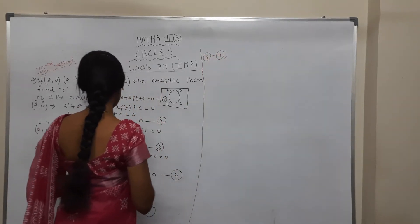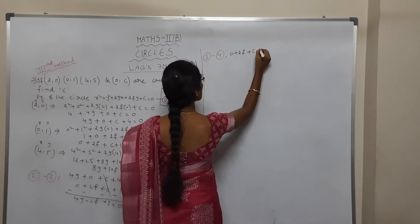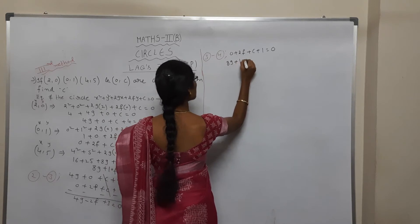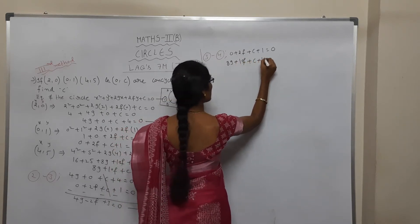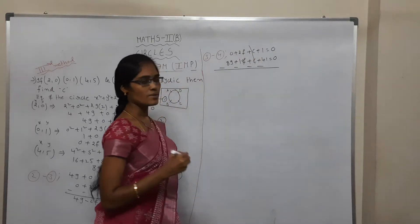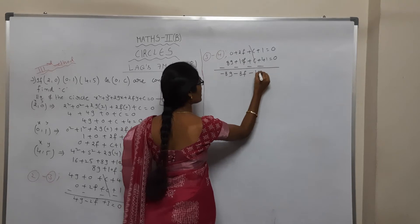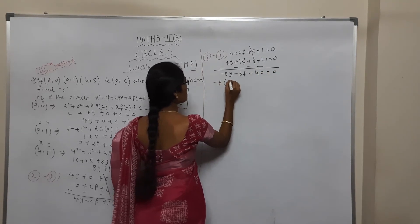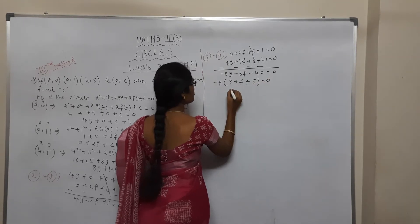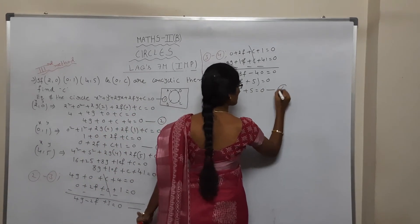Now subtract Equation 3 minus Equation 4. Third equation: 2F + C + 1 = 0. Fourth equation: 8G + 10F + C + 41 = 0. Changing signs: −8G − 8F − 40 = 0. Taking −8 as common: G + F + 5 = 0. Consider this as Equation 6.